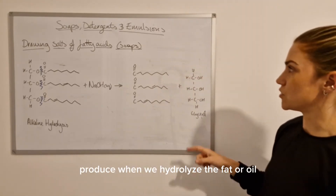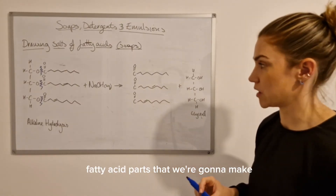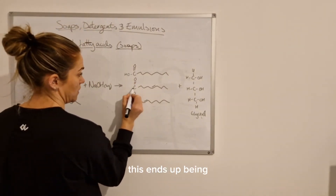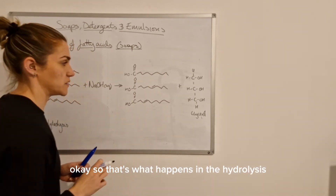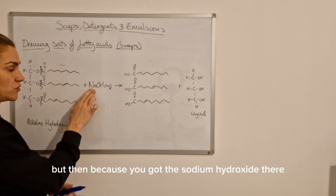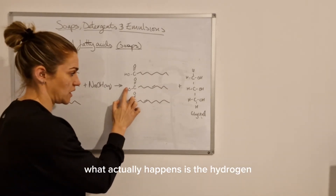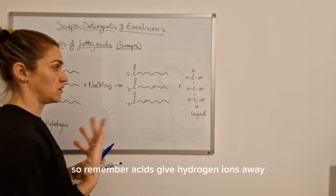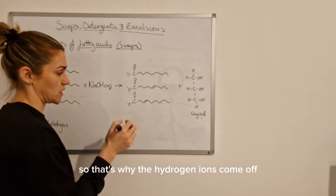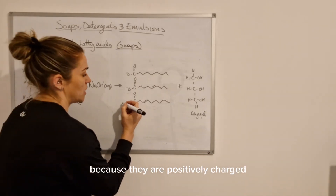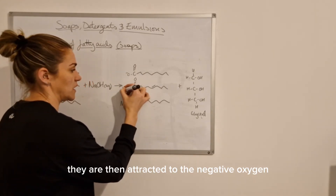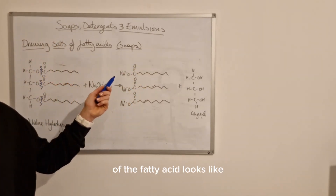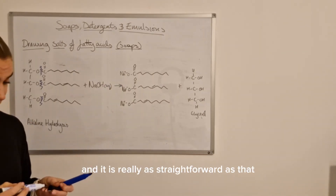You've got the glycerol that's always produced when you hydrolyze fat and oil, and then the three fatty acid parts. Just like when you hydrolyze any ester, those end up being carboxyl groups again. Then, because you've got sodium hydroxide present, the sodium ions cause the hydrogen ions to come off the carboxyl group, making it negative. Acids give hydrogen ions away, so the hydrogen comes off, and the sodium ions - being positively charged - are attracted to the negative oxygen.